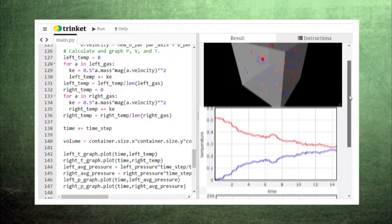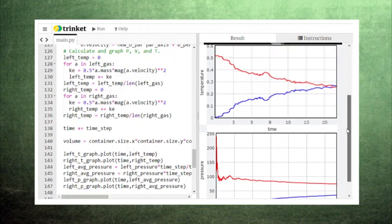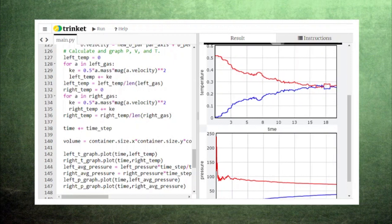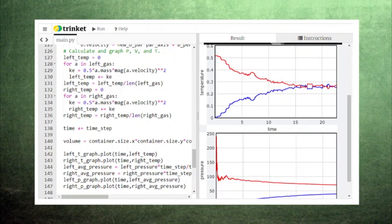Eventually, the two gases settle out around the same temperature. We call this state thermal equilibrium. Similarly, the pressures of the two gases eventually even out. When the two gases reach the same temperature and same pressure, they're effectively behaving like a single gas.